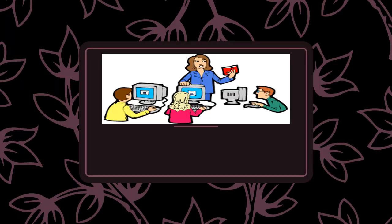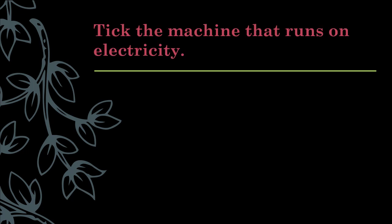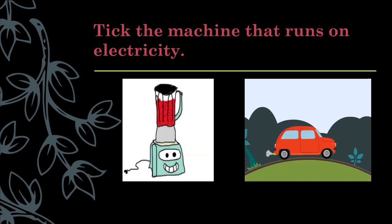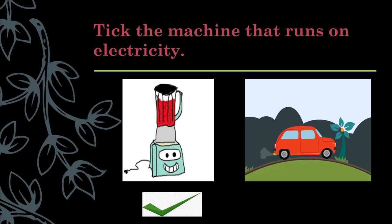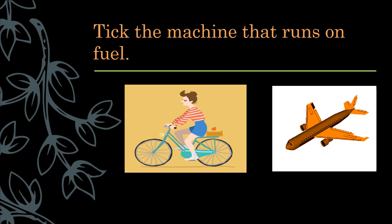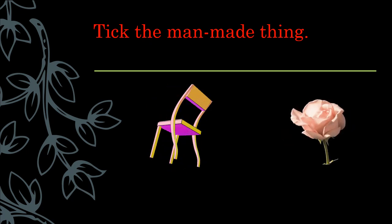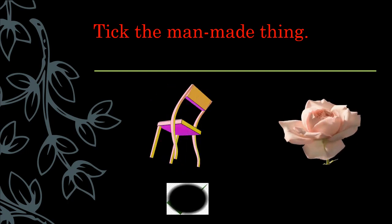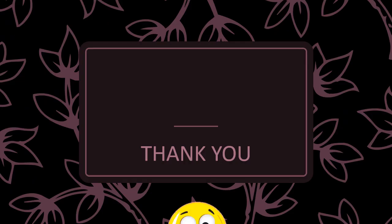Let's do some activities. Take the machine that runs on electricity. Yes, mixture. Take the machine that runs on fuel. Aeroplane. Take the man-made thing. Chair. Thank you children.